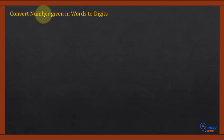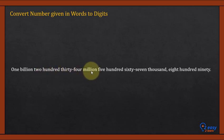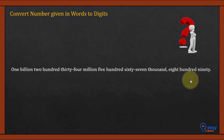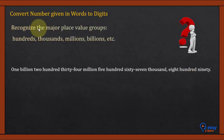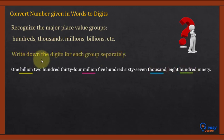How to convert a number given in words to digits? It's the reverse process. For example, we have the number: one billion two hundred thirty-four million five hundred sixty-seven thousand eight hundred ninety. The first step is to recognize the major place value groups: hundreds, thousands, millions, and billions. Then write down the digits for each group separately, using commas.